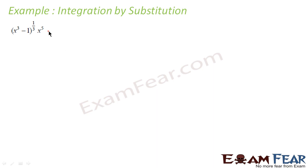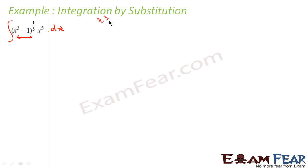Consider the integral of (x³ − 1)^(1/3) · x⁵ dx. These are random questions you'll get very commonly, where the expression inside to the power 1/3 is complex. So how do we solve such questions? Let's assume this complex part — x³ − 1 — is t. If x³ − 1 = t, then differentiating gives 3x² dx = dt.